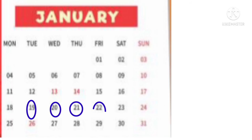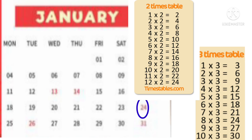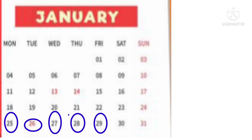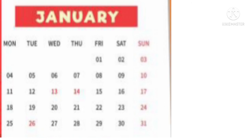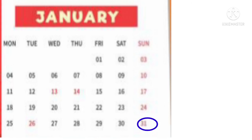Continuing January: numbers 19 to 23 are not divisible by both 2 and 3. The number 24 is divisible by both – 12×2=24 and 8×3=24. Numbers 25 to 29 are not divisible by both 2 and 3. The number 30 is divisible by both – 15×2=30 and 10×3=30. Finally, 31 is not divisible by both 2 and 3.